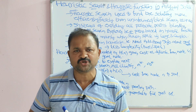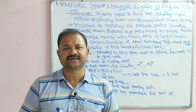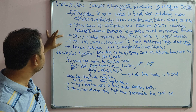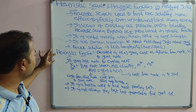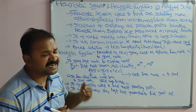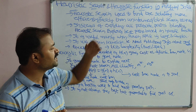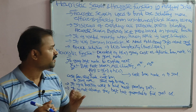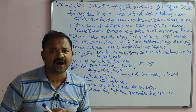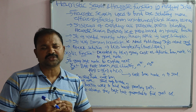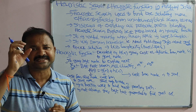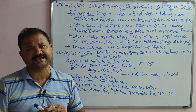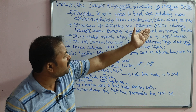Let us discuss heuristic search and heuristic function in artificial intelligence. Heuristic search is a technique used in artificial intelligence to find solutions more efficiently or faster than uninformed or blind search techniques. The major advantage of heuristic search is that we can find solutions more efficiently and more quickly than uninformed or blind search.